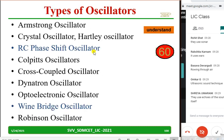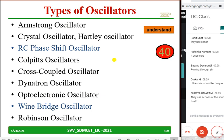Types of oscillators: Armstrong, crystal, RC phase shift, Colpitts, cross-coupled, dynatron, optoelectric, Wien bridge — many oscillators exist. But in our syllabus there are two: RC phase shift oscillator and Wien bridge oscillator. Most fundamental working principles are the same. You might have studied RC phase shift and Colpitts in your third semester in the electronic circuits subject.